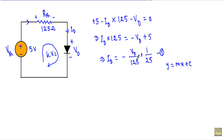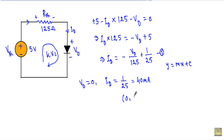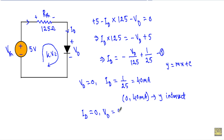From equation 1, I find the two intercepts needed to draw the line. Setting Vd = 0: ID = 5/125 = 40 mA, giving the Y-intercept at (0, 40 mA). Setting ID = 0: Vd = 5 V, giving the X-intercept at (5 V, 0).